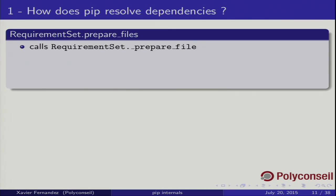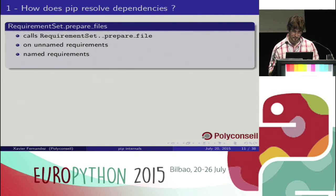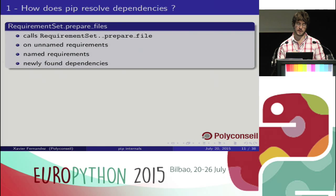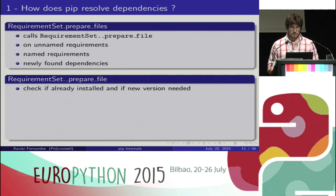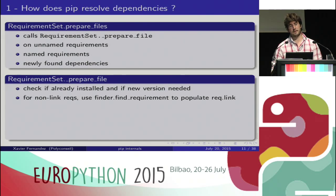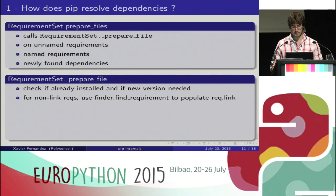Now you have a big bag of requirements and pip calls prepare_files, which prepares the files for installation. It calls prepare_files on all unnamed requirements first — those are editable ones or when you ask it to install a path or file — then named requirements, and after that the newly found ones, the dependencies of the previous requirements. What does prepare_file do? First it checks whether it's already installed and if the currently installed version matches the requirement. Then it tries to find a link corresponding to the package — if you say pip install django, pip needs to know where the file is — this is done in find_requirement, which I'll talk about more in the last part.